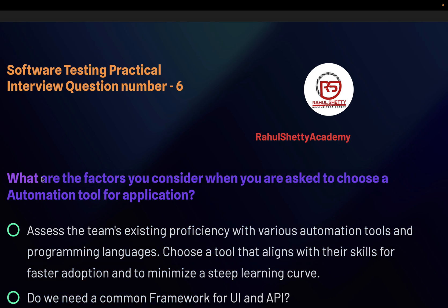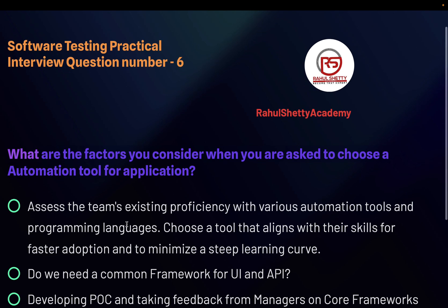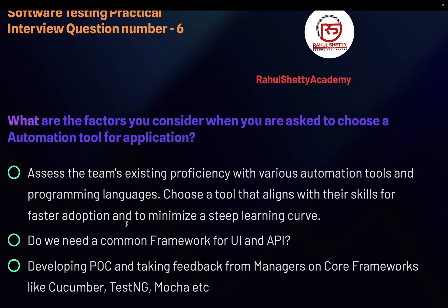The systematic way to approach this in an interview is to explain that you involve people — that's what interviewers want to hear, not that you made the decision solo. Develop at least three to four POCs, each with a basic framework skeleton and one simple test, and present them to your managers or higher authority. Show how tests are written in each framework — how they look in Cucumber versus TestNG, how reports are generated, how logs are captured, how screenshots are taken. Create a table of pros and cons for each POC, gather collective feedback, and then give a final recommendation based on that input.